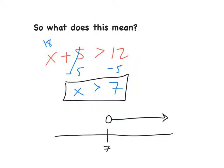We can't put the number 7 here because 7 plus 5 is not greater than 12. It's greater than or equal to 12. So that's why we're not including this 7, but any number greater than 7 will work. So if we can get 8, 9, 10, 11, so on and so on. Any number greater than 7 will make this a true inequality.